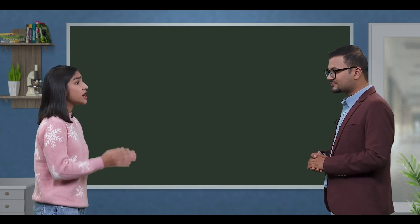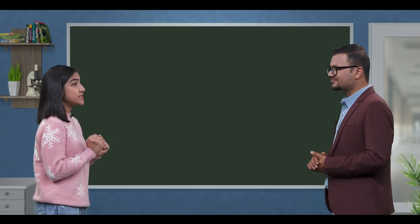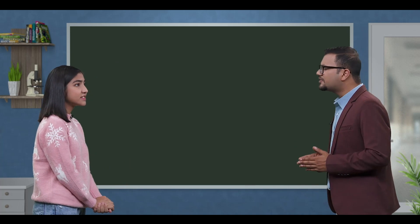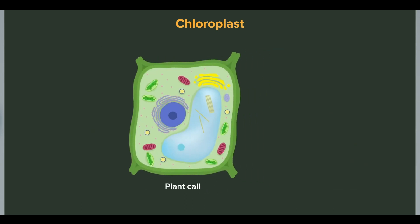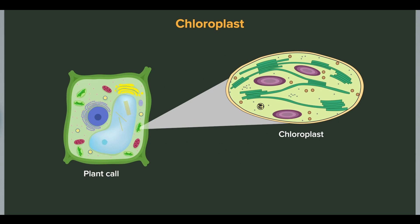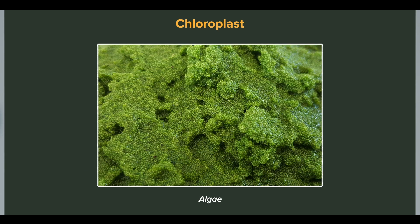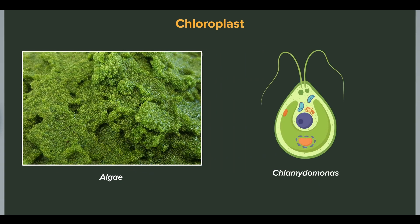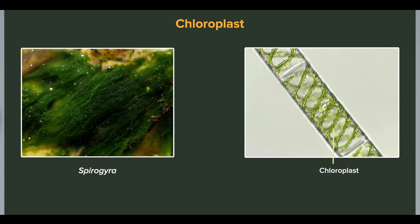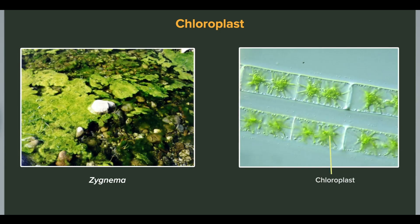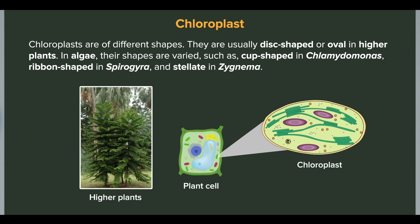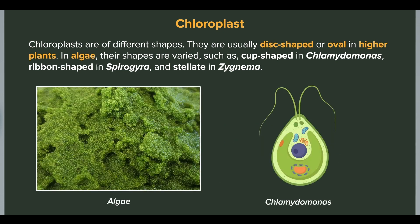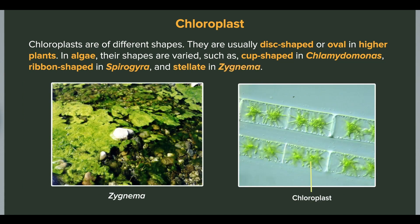Light energy for photosynthesis is absorbed in chloroplasts. Chloroplasts are of different shapes — they are usually disc-shaped or oval in higher plants. In algae, their shapes are variable, such as cup-shaped in Chlamydomonas, ribbon-shaped in Spirogyra, and stellate in Zygnema.